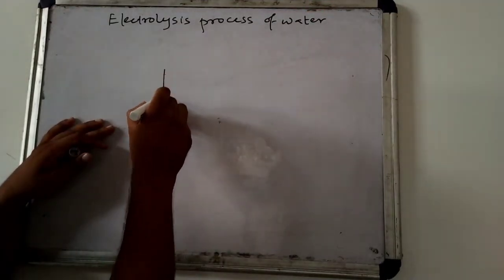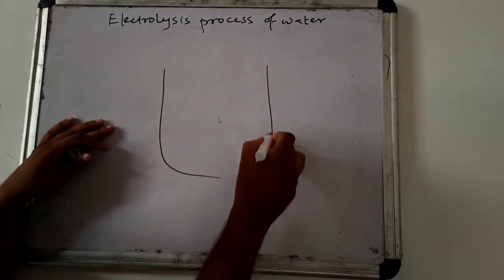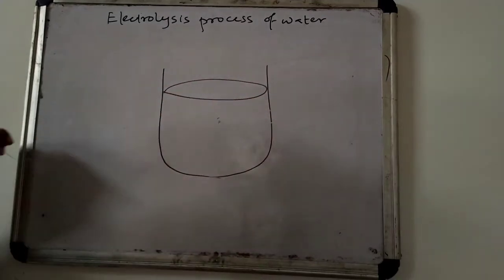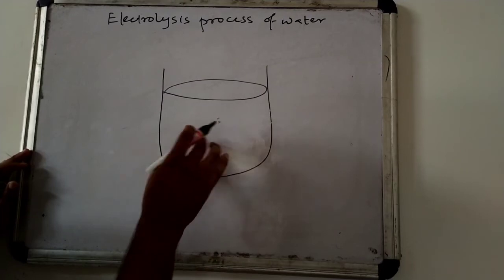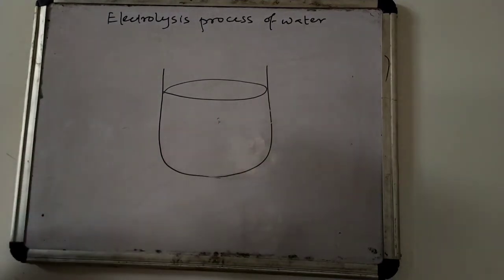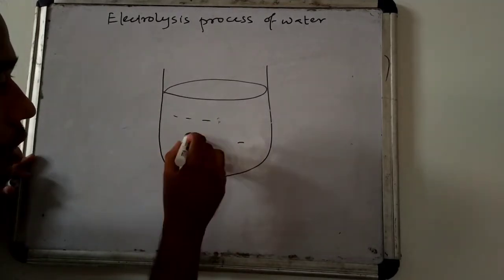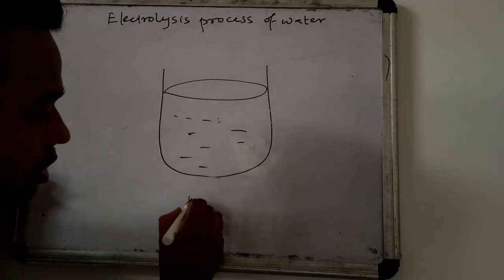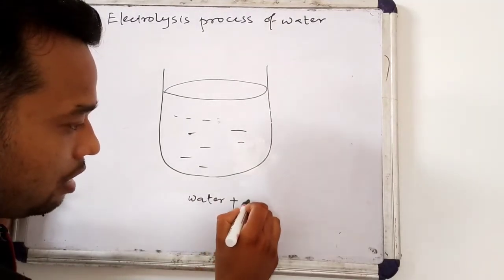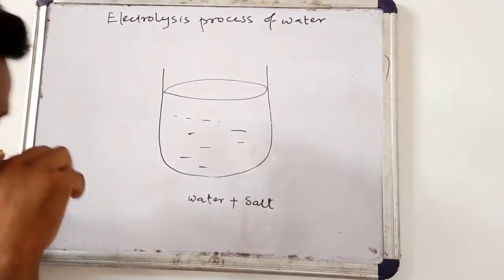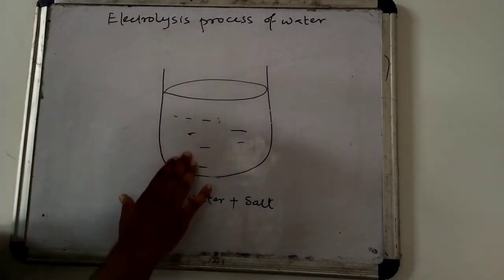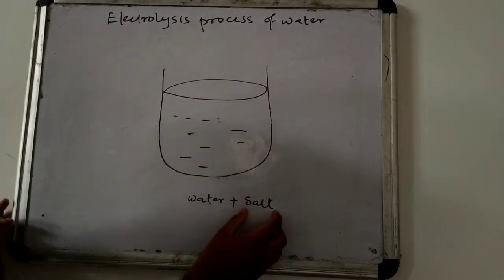Take a container and put some water here. If we take pure water then we cannot do electrolysis because pure water cannot conduct electricity, and that is why with water we have to add some salt — a small amount, just to make sure that the current can pass through the water. This salt amount should be less.